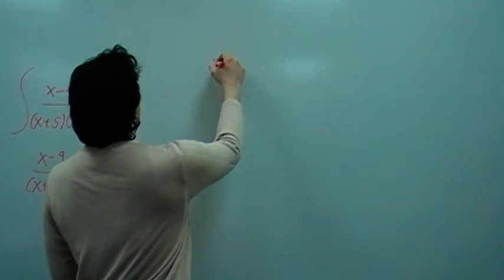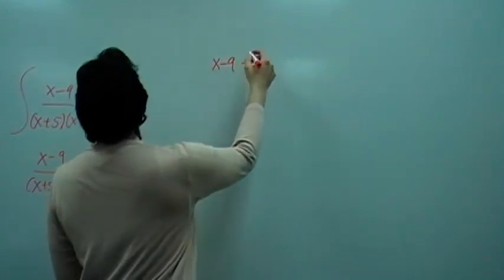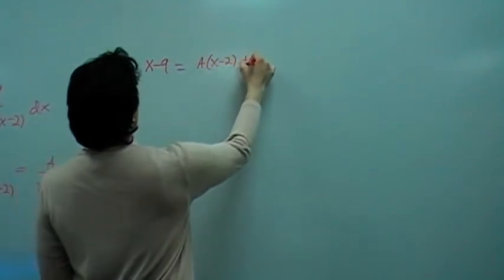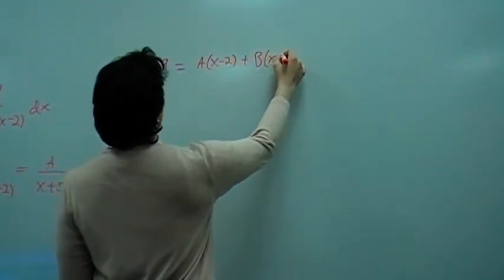We're going to have, after you did the multiplication on both sides, you should have x minus 9 equals A times (x minus 2) plus B times (x plus 5).